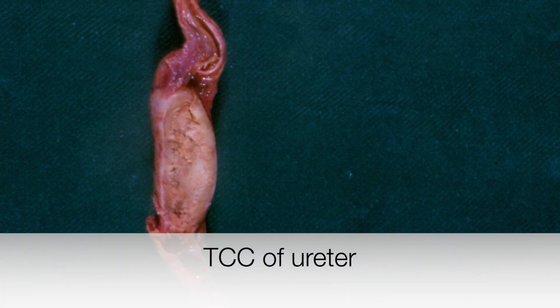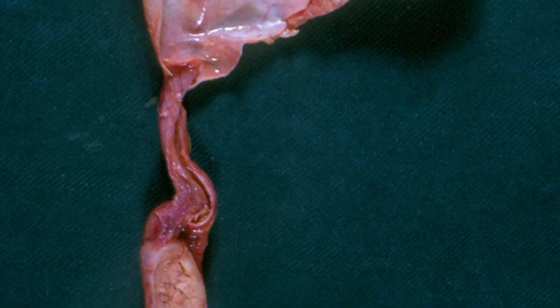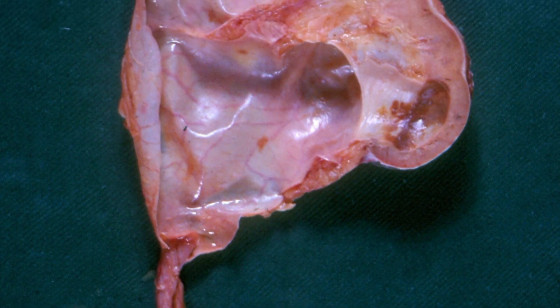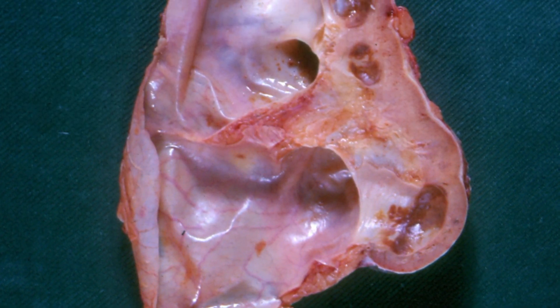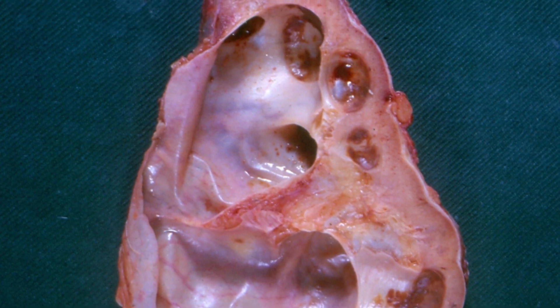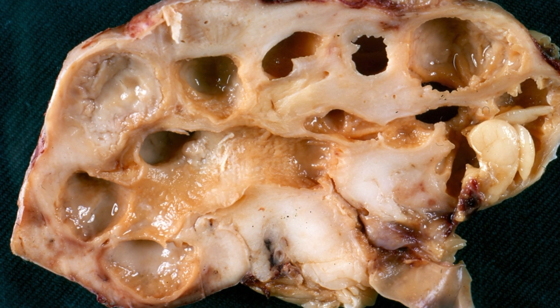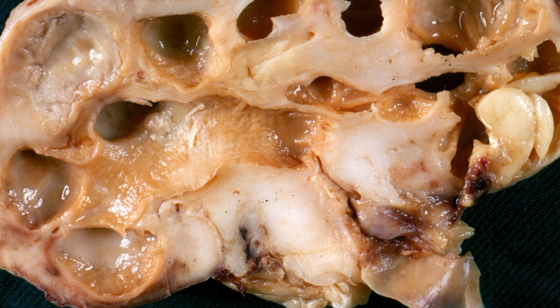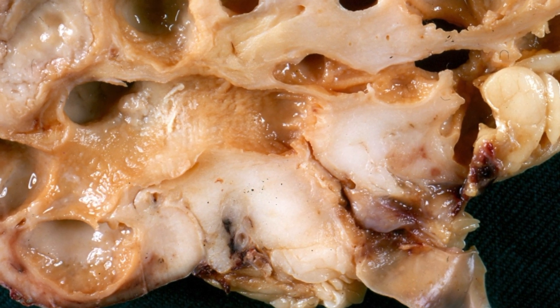Here there is a tumour in the distal ureter — a transitional cell carcinoma causing complete obstruction of urinary outflow. The distal ureter is the part furthest away from the kidney, and this has caused hydronephrosis with very marked dilatation of the calyces and renal pelvis. Here is hydronephrosis caused by transitional cell carcinoma of the renal pelvis — that is the solid white area we are zooming into.